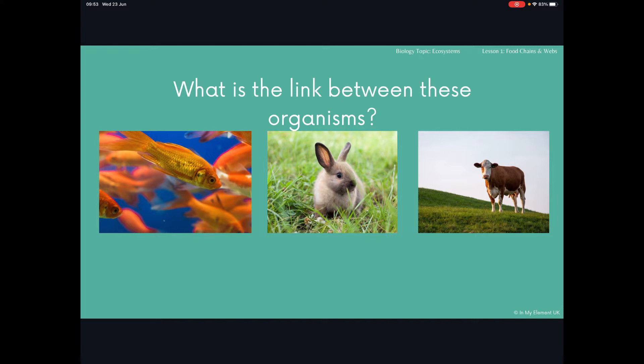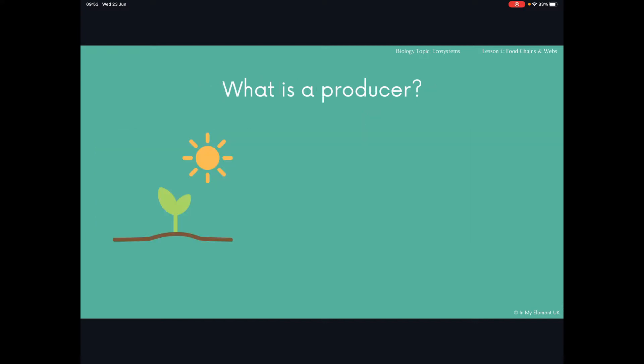A food chain will show you the relationship between different organisms within an ecosystem. To start off you need to understand what a producer is. We've got an image here of a green plant and the sun. The producer is a green plant and the green plant absorbs the light from the sun for photosynthesis.